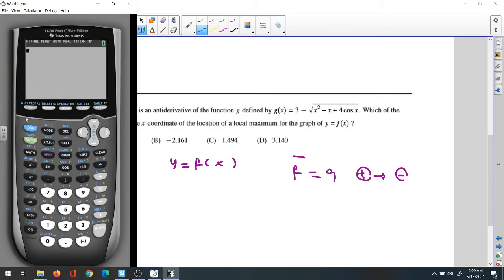Let's clear out and look at the graph here. We graph the function 3 minus square root of x squared plus x plus 4 cosine x, and this is our function.